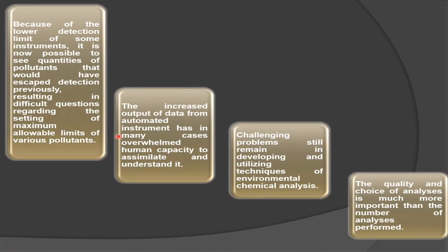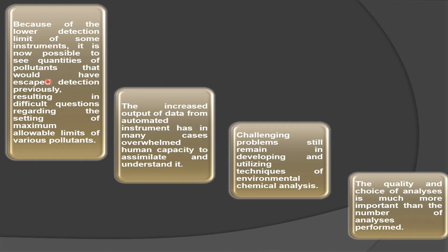Because of the lower detection limits of modern instruments, it is now possible to see quantities of pollutants that would have escaped detection previously, resulting in difficult questions regarding the setting of maximum allowable limits of various pollutants. For example, pollutants like chromium, lead oxides, or lead itself — even if present in very small quantities in water — can be very harmful.